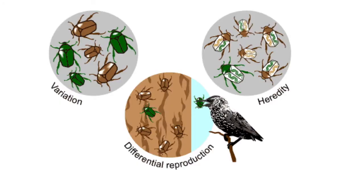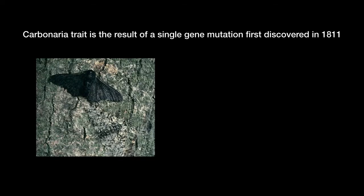And in the extremely rare case that a mutation is beneficial and happens to increase the fitness of an individual, that mutation would be selected for, and over time significantly change the population, which can lead to evolution. For example, the carbonaria trait in the peppered moth is due to a single gene mutation. This darkly colored moth was first discovered in 1811. On the lichen-covered trees that the moths frequented, the mutation was certainly a survival disadvantage, since it caused the moth to be more visible to predators.